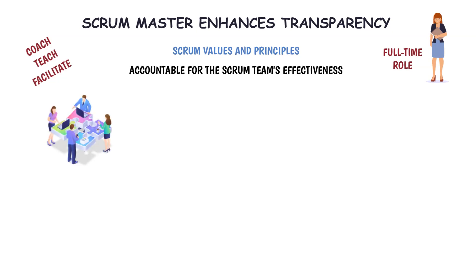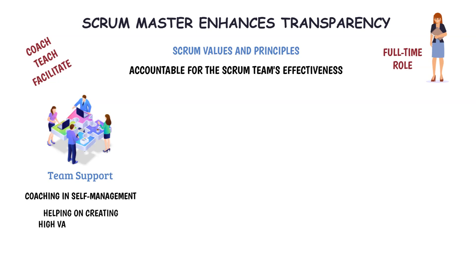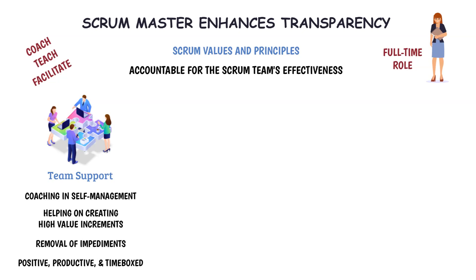The Scrum Master serves the Scrum team in several ways, including: coaching team members in self-management, as self-management is crucial for successfully adopting Scrum and moving away from the traditional command and control culture; helping the Scrum team focus on creating high-value increments that meet the definition of done by facilitating team decisions; removal of impediments — such as knowledge gaps, older processes, and organizational practices — because impediments may slow down team productivity; and ensuring that all Scrum events take place and are positive, productive, and kept within the time box.